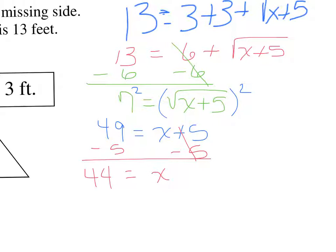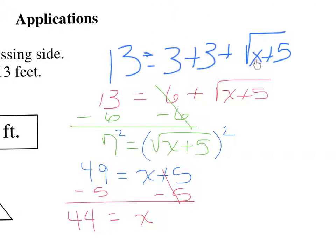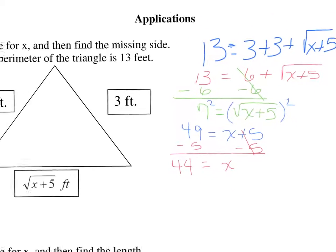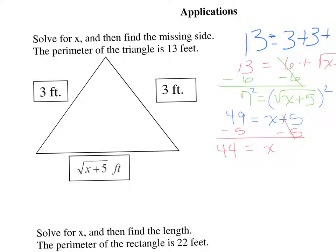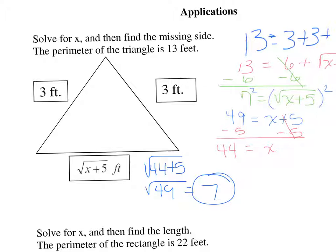Checking: 44 plus 5 is 49, the square root of 49 is 7, and 7 plus 3 plus 3 is 13. It checks out. We solved for x, but we also need to find the missing side. Substituting x equals 44: the square root of 44 plus 5 equals the square root of 49, which is 7. So the missing side equals 7 feet.